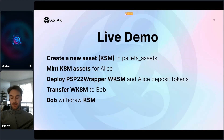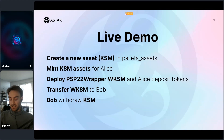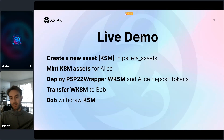In the demo, I will first present the PSP22 wrapper and how it works, then have a small demo. I will deploy it on Shibuya, create a new asset, and mint that asset for Alice. Inside the wrapper, Alice will deposit KSM and get wrapped KSM. Then I will transfer this wrapped KSM to Bob, and then Bob will withdraw KSM — burning his wrapped KSM to get KSM back.